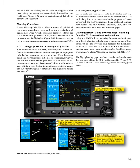Reviewing the flight route: once a route has been entered into the FMS, the next step is to review the route to ensure it is the desired route. It is particularly important to ensure that the programmed route agrees with the pilot's clearance, the en-route and terminal area charts, and any bearing, distance, time, and fuel calculations that have been performed on paper. Using the FMS's flight planning function to cross-check calculations is one example of how advanced cockpit systems can decrease the likelihood of an error. Alternatively, cross-check the computer's calculations against your own.